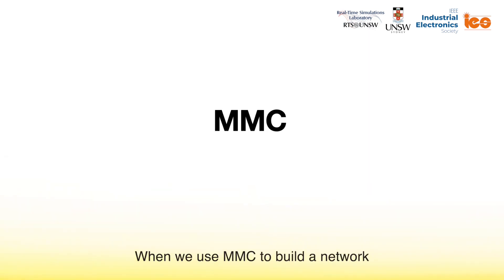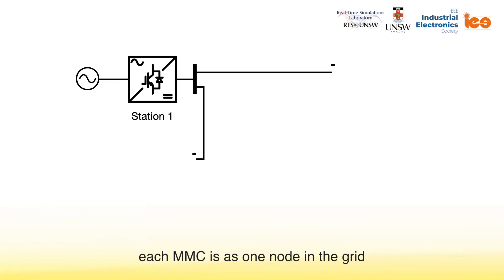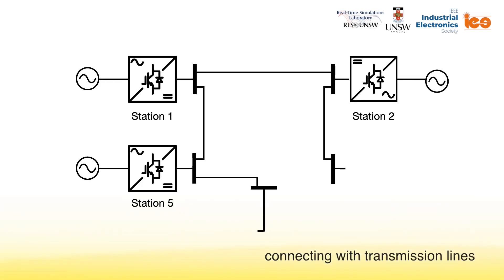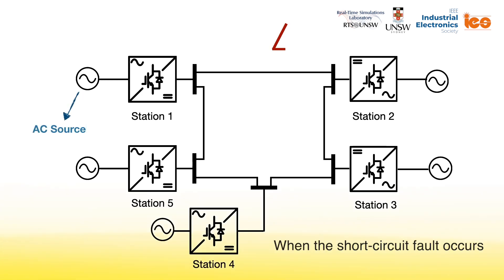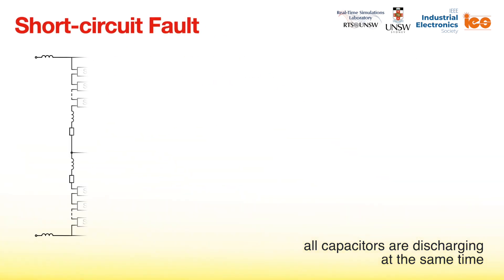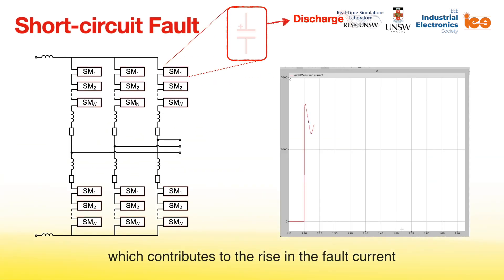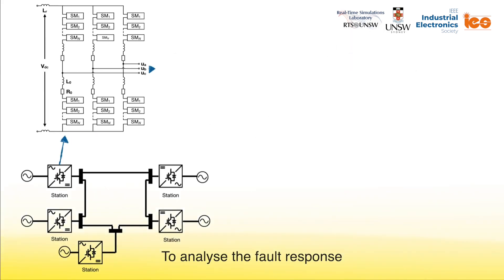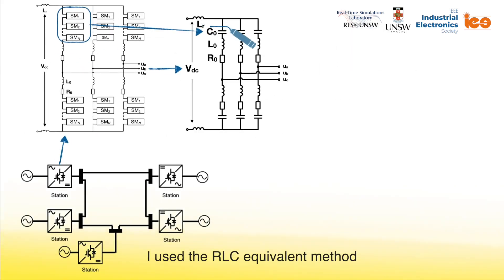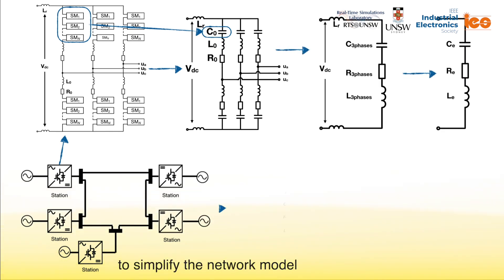When we use MMC to build a network, each MMC acts as one node in the grid, connecting with transmission lines or cables that are like branches in this network. When a short-circuit fault occurs, all capacitors are discharging at the same time, which contributes to the rise in the fault current. To analyze the fault response and calculate the fault current, I used the RLC equivalent method to simplify the network model.